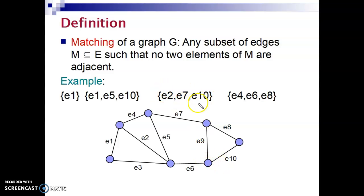You can examine the other two examples here that are formed of three other edges. For example, E2, E7, E10, or E4, E6, E8. All of these represent different matchings.